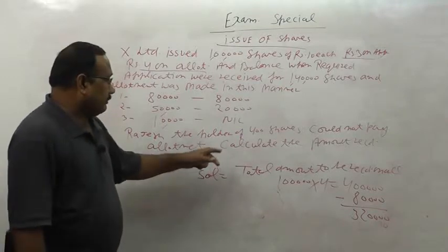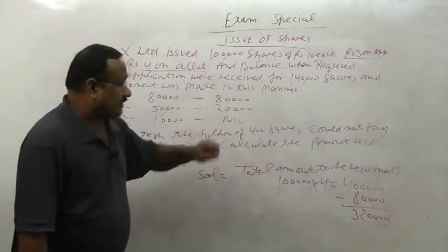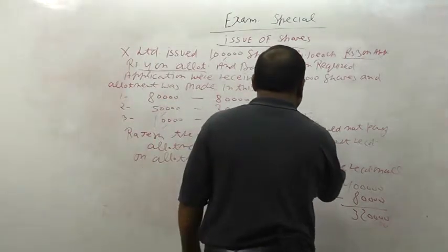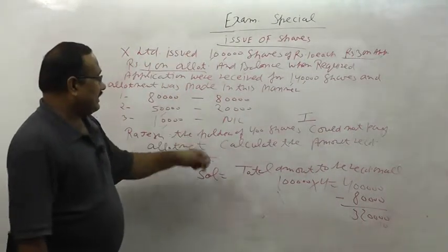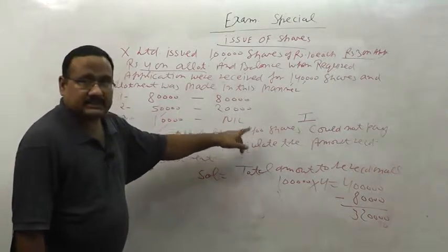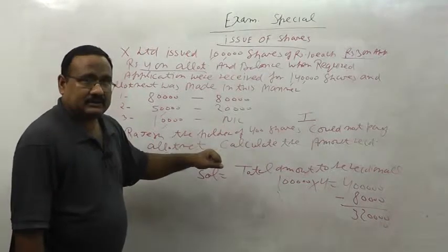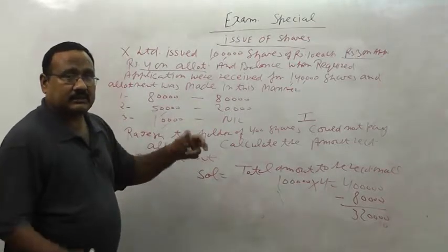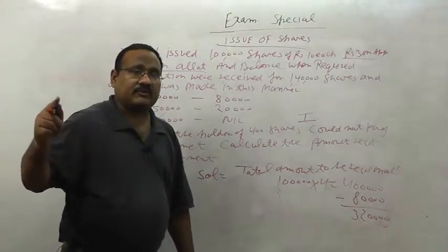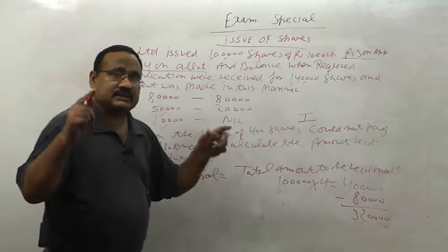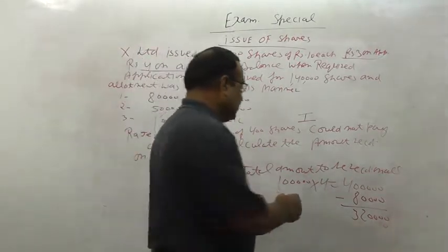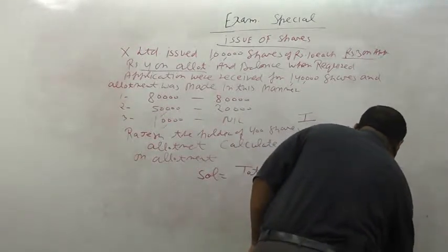Now see who did not pay on allotment — Rajesh, the holder of 400 shares. Find which category Rajesh belongs to. Assuming he is from category 1 — the first category where applicants received exactly as many shares as they applied for. Rajesh did not pay allotment. Allotment amount is rupees 4, Rajesh has 400 shares, so 1,600 rupees not paid. Category 1 has no carry forward amount, so the question becomes straightforward.